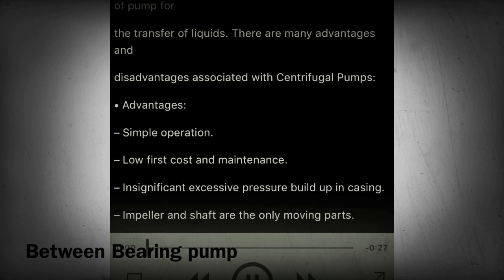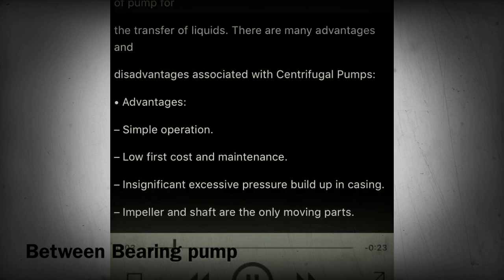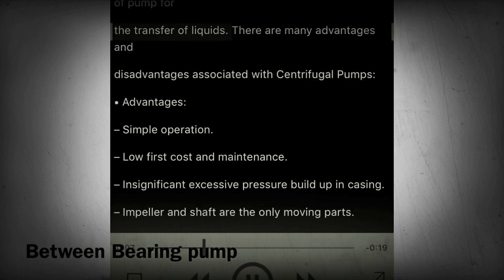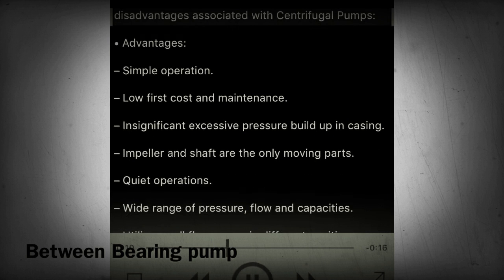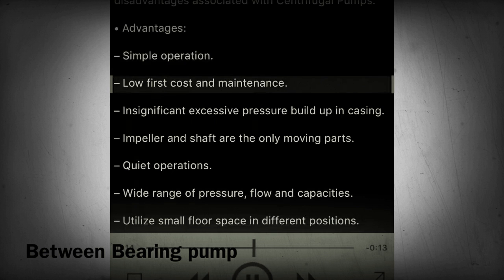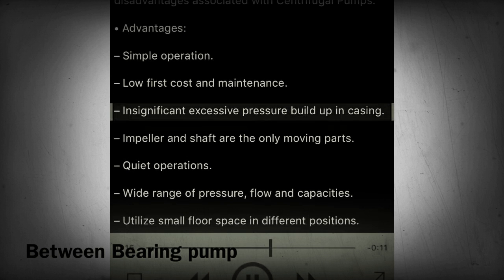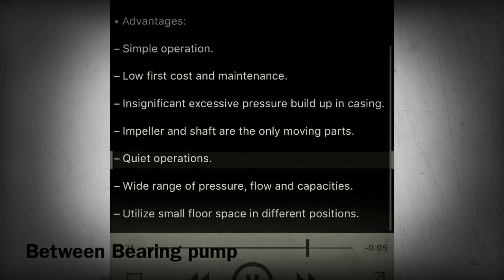Sections 36-38 - Advantages and disadvantages of centrifugal pumps. Centrifugal pumps are the most widely used type of pump for the transfer of liquids. Advantages include: simple operation; low first cost and maintenance; insignificant excessive pressure buildup in the casing; impeller and shaft are the only moving parts; quiet operation; and a wide range of applications.